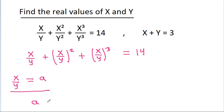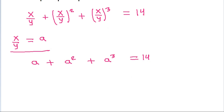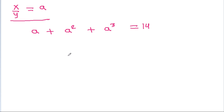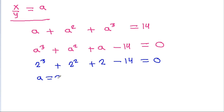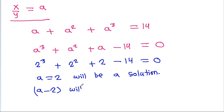then we get a plus a² plus a³ equal to 14, which rearranges to a³ + a² + a - 14 = 0. If we put a = 2, we get 2³ + 2² + 2 - 14, which is 8 + 4 + 2 - 14 = 0. So a = 2 is a solution, meaning (a - 2) is a factor.